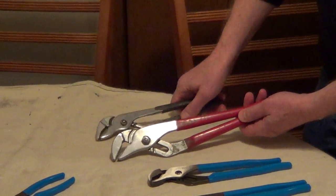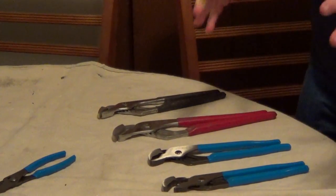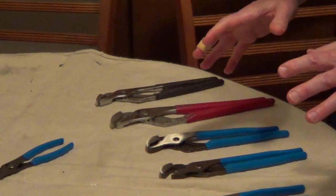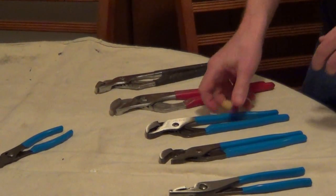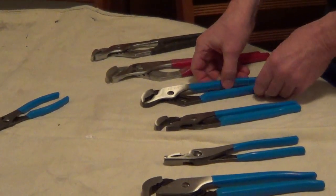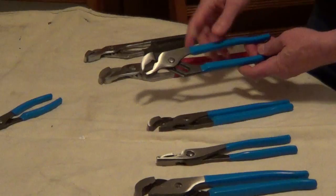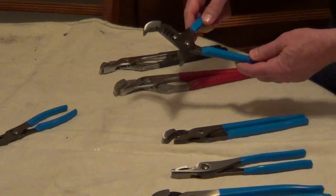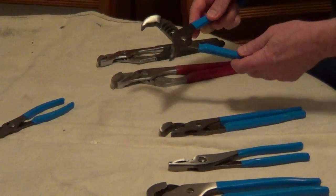One is a V-joint and one is a smooth jaw. Depending on the project, there are many different styles available at the hardware store. These new ones I just bought are from Channel Lock, who innovated the tongue and groove style, which allows you to adjust to a wide range of different materials.